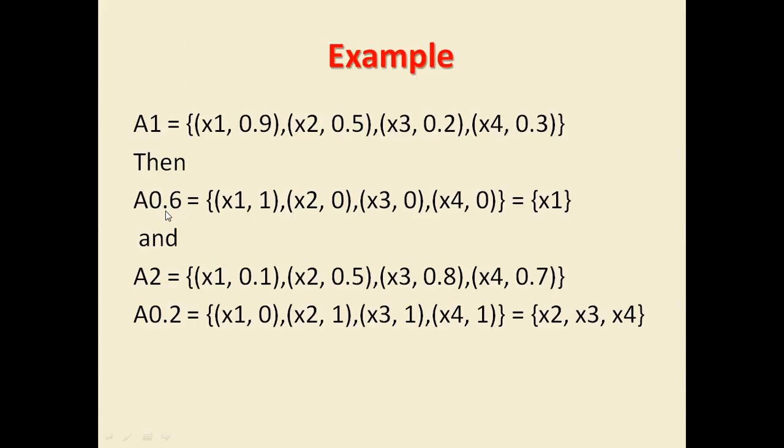What is the alpha value in this case? It's 0.6. Which elements should be kept in the new set? All those who are having value greater than or equal to 0.6. So 0.9 is true in this case, 0.5 is false, 0.2 is false, 0.3 is false because all these are having value less than 0.6. Only 0.9 is greater than 0.6, so the new set will contain only one element, that is x1.